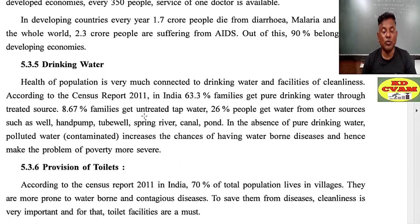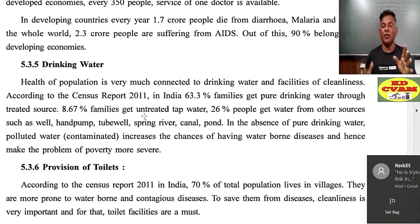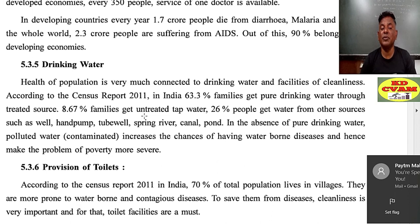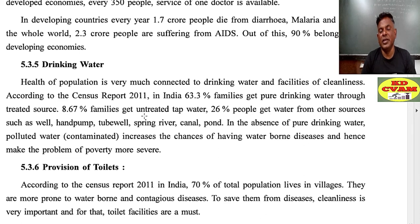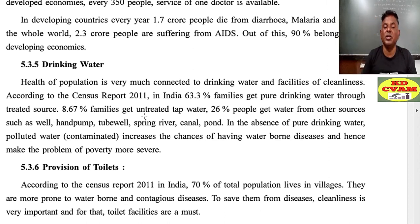The health of the population is very much connected to drinking water. According to the Census Report 2011, in India 63.3% of families get pure drinking water through treated sources (i.e., government or municipality-treated water), 6.7% of families get untreated tap water, and 26% of people get water from other sources like wells, hand pumps, springs, rivers, and canals. In the absence of pure drinking water, polluted water increases the chances of waterborne diseases and makes the problem of poverty more severe.